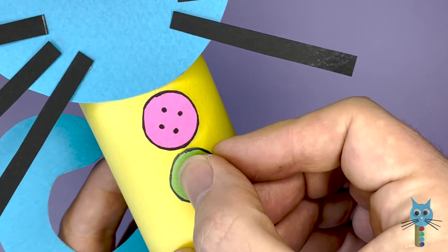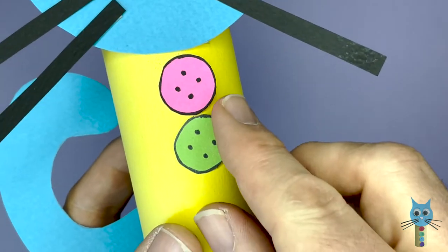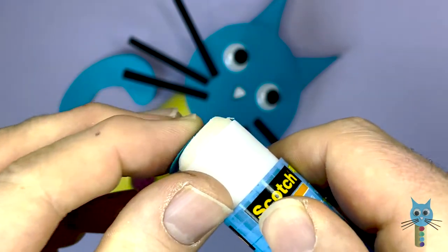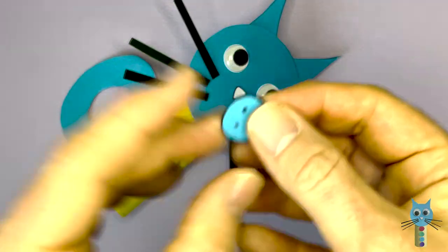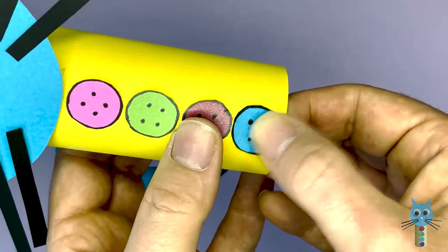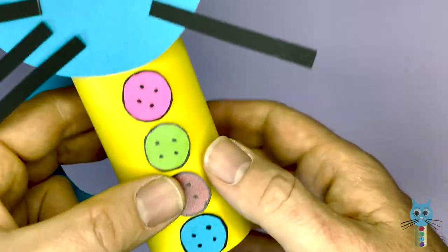This time I have a green button. Pink and green. Looking really good. And then one more. This time it's blue. It's actually the same color as the face. And that's it. I actually now have all of my buttons for the body.